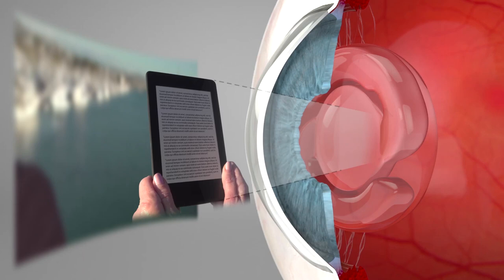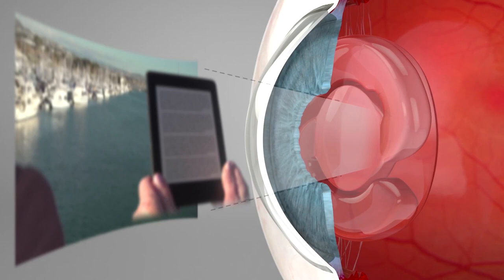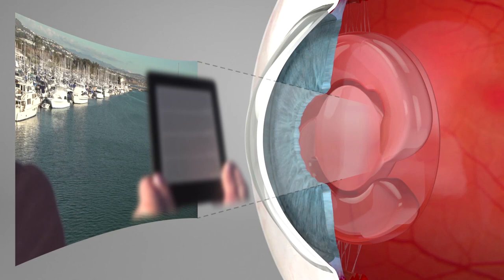Conversely, when the eye adjusts for distance vision, fluid inside the FluidVision lens moves from the center of the lens and back onto its edges, decreasing both the curvature of the lens as well as its optical power, thereby bringing distance objects into focus.